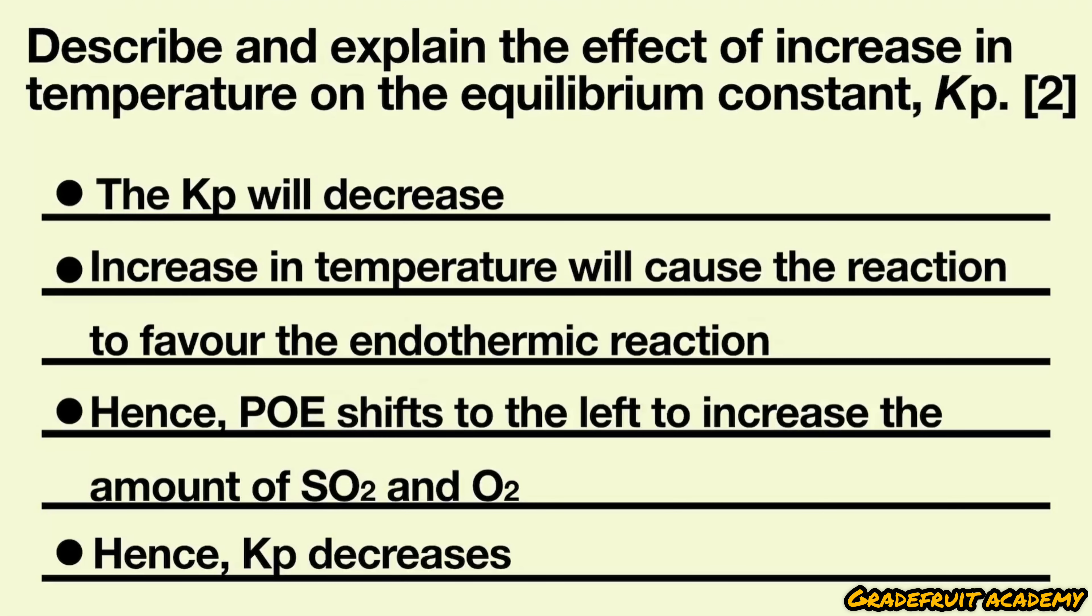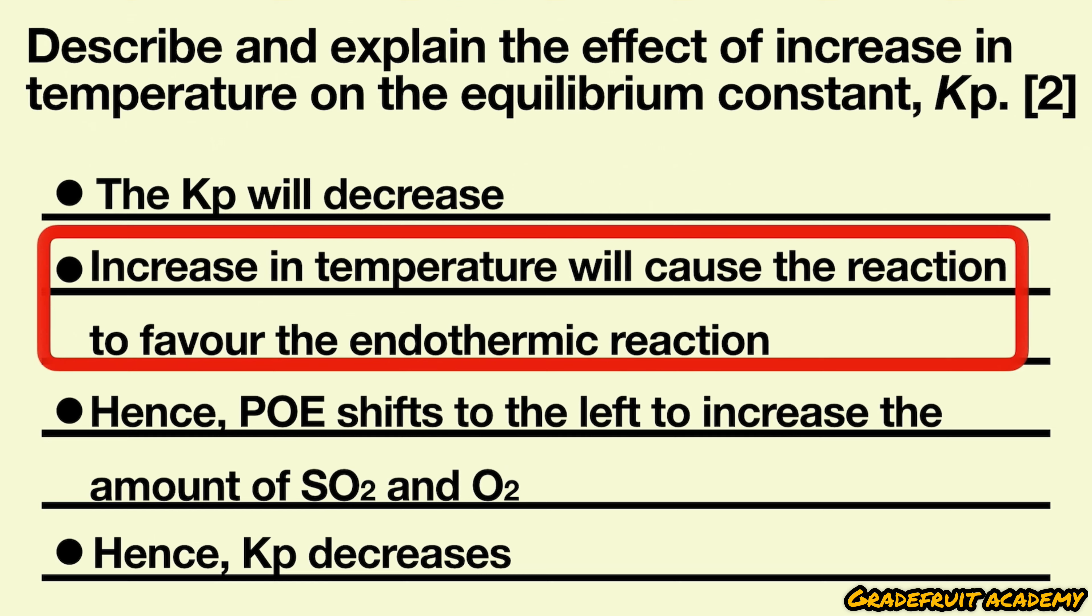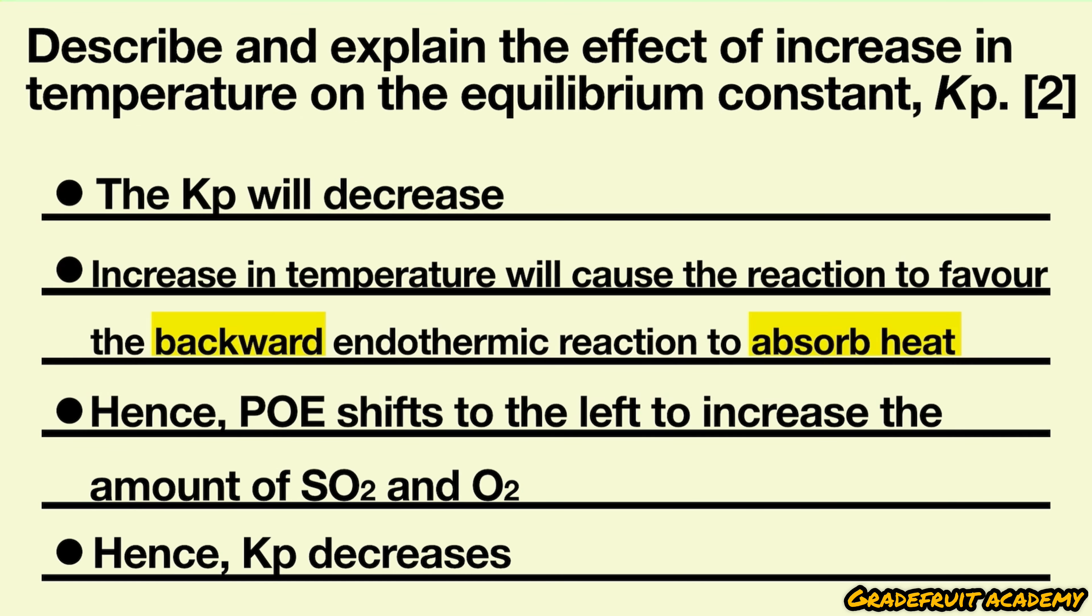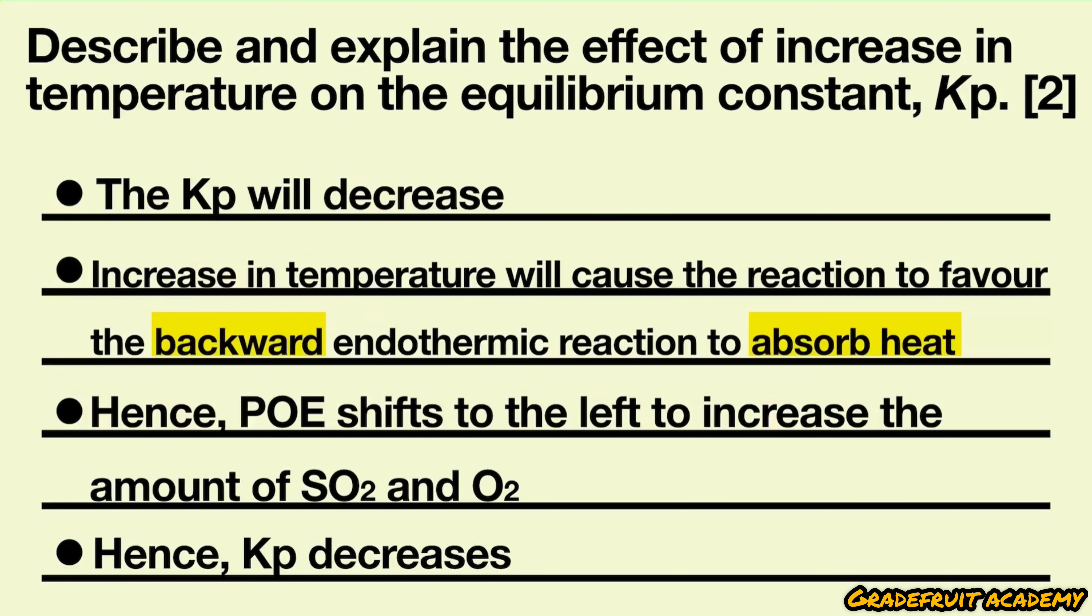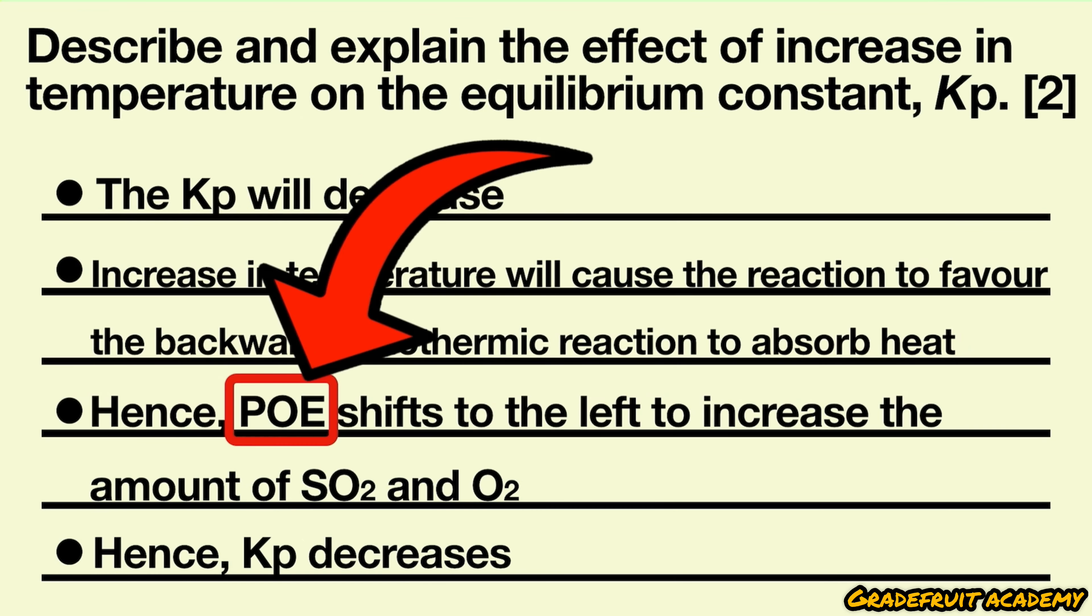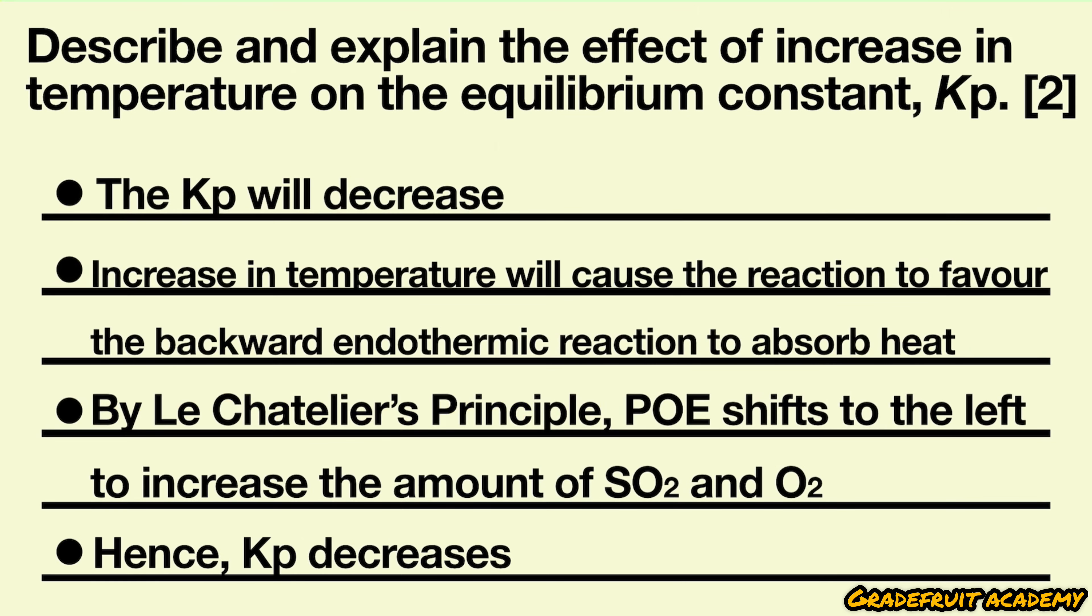Now let's see how we can improve this answer. The first bullet point is okay as it answers directly to the question. For the second bullet point, we can add on 'to favor the backward endothermic reaction to absorb heat' to be more specific. Then for the next bullet point, as we are talking about position of equilibrium, we must write 'by Le Chatelier's principle' as this is the main concept governing the shift in the POE.